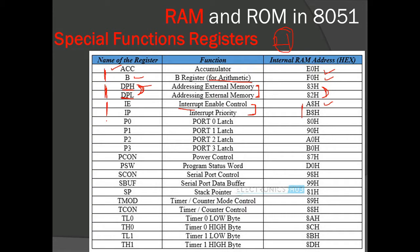We also have four registers called P0 to P3. Don't confuse these with port 0 to port 3 — the names are the same but these are internal registers in 8051, whereas externally we call them port 0, port 1, port 2, and port 3. These registers are responsible for latching the data from the respective ports, and their addresses are 80H, 90H, A0H, and B0H.